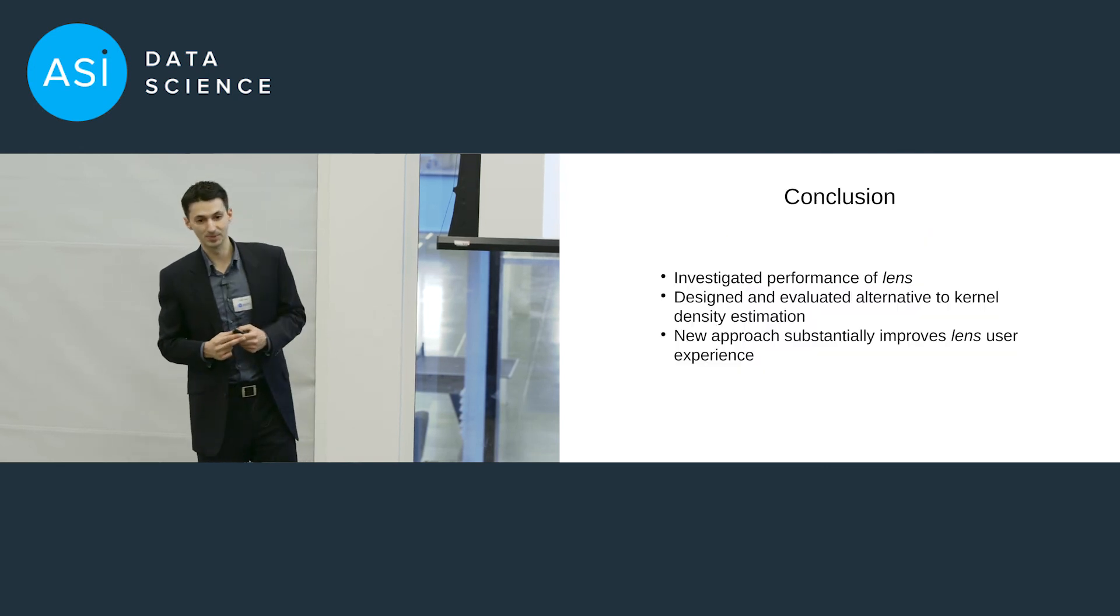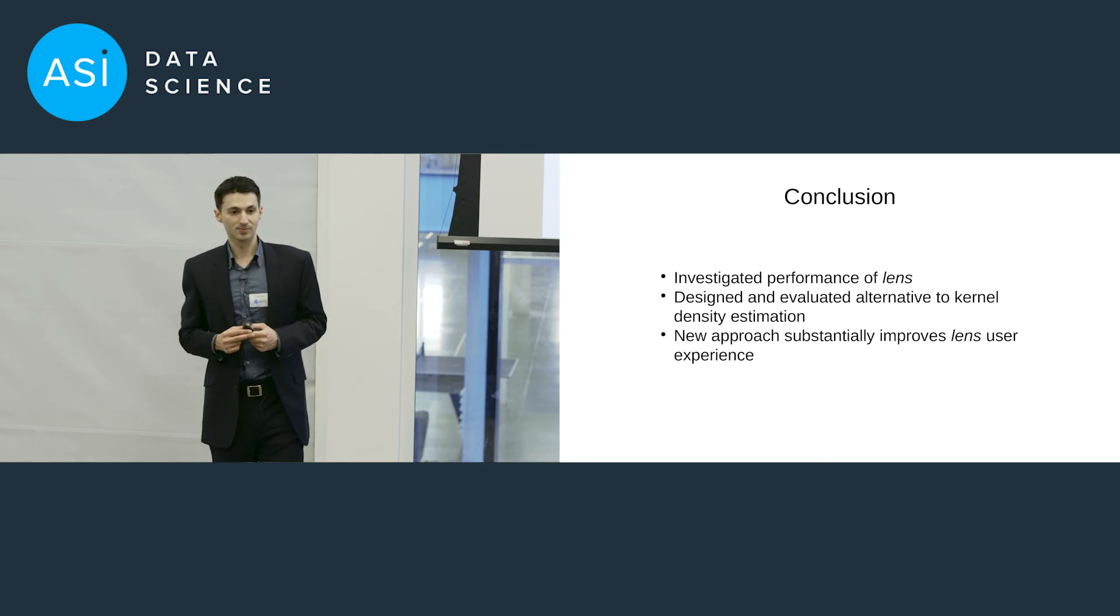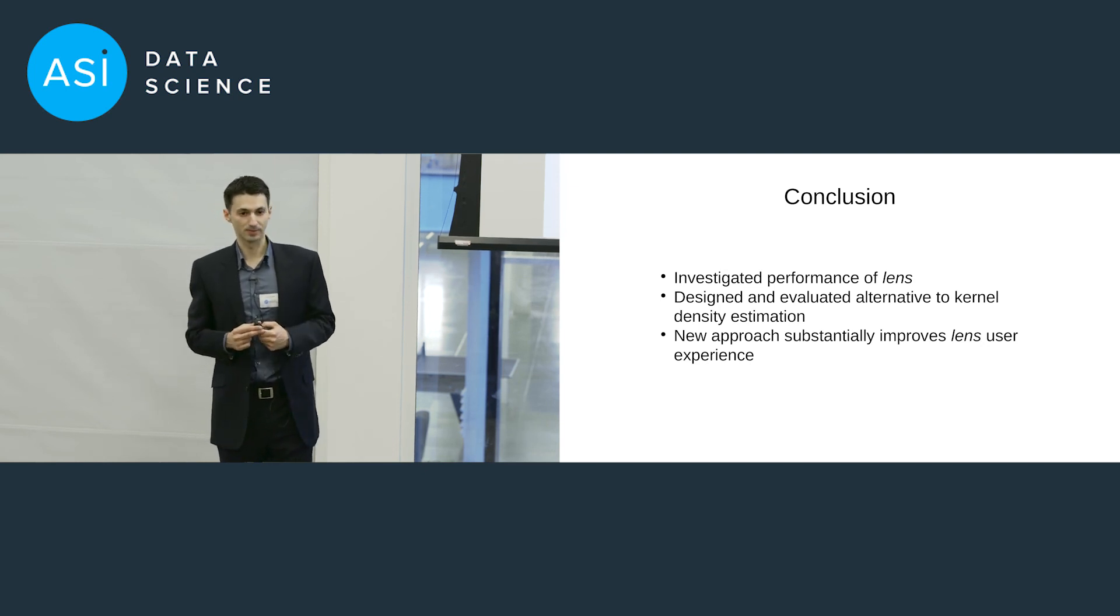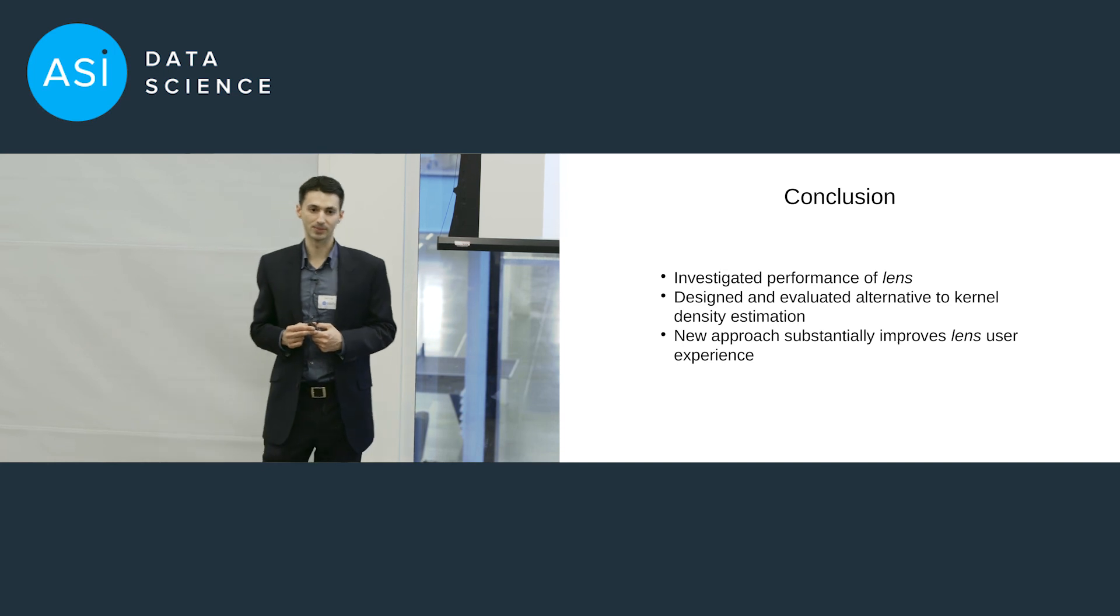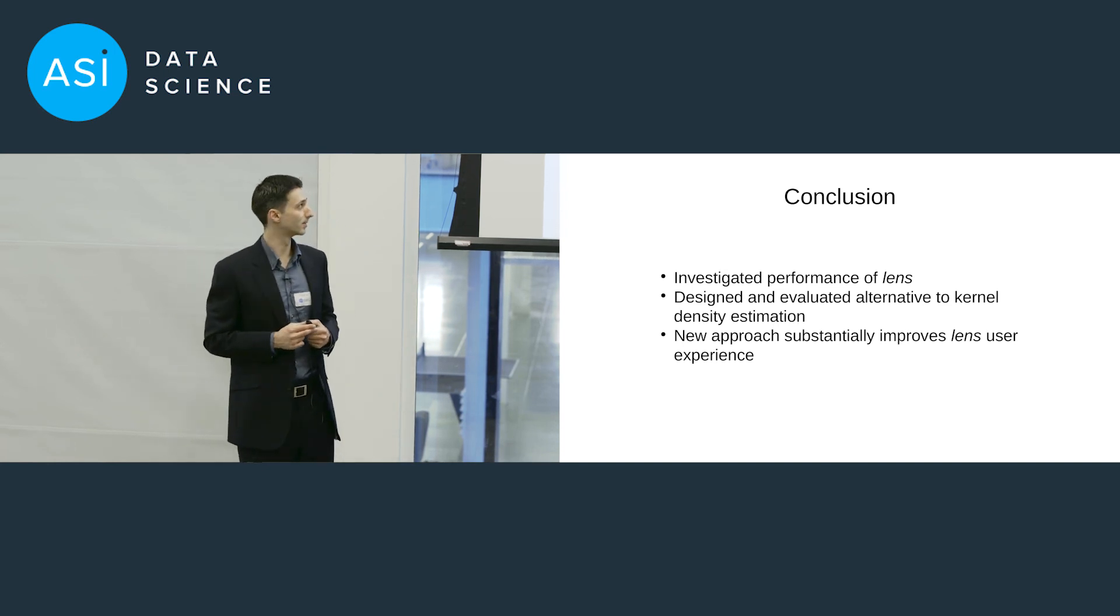Okay, so to briefly conclude, this project looked at the performance of the Lens library, which is a part of the Sherlock ML platform. And in particular, it considered the pairwise density estimation problem. As part of that, I looked at an alternative solution based on smooth histograms. And that approach works well. It's a replacement for the original approach. And that, in turn, improves the user experience. Thank you very much.